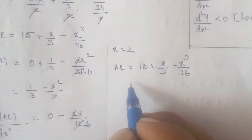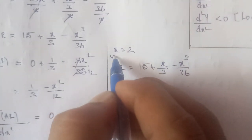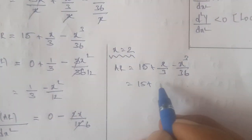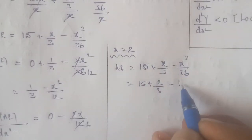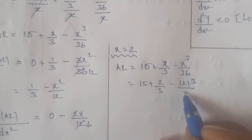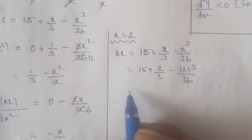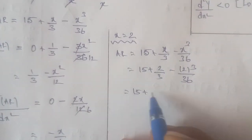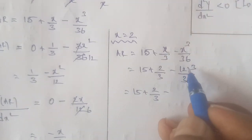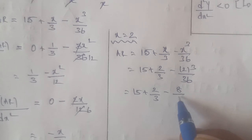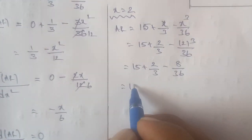Continuing the calculation: AR = 15 + 2/3 − 8/36. Taking LCM of 36, we get 15 + 24/36 − 8/36 = 15 + 16/36 = 15 + 4/9. So AR = 135/9 + 4/9 = 139/9.